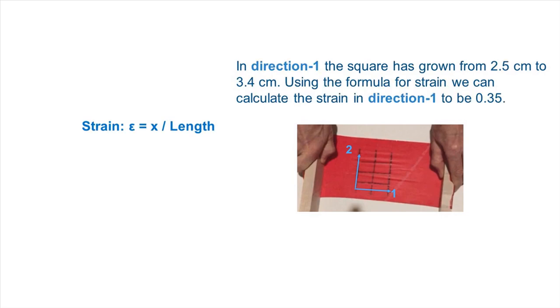In direction 1, the square has grown from 2.5 cm to 3.4 cm. Using the formula for strain, we can calculate the strain in direction 1 to be 0.35.